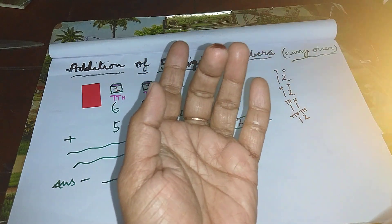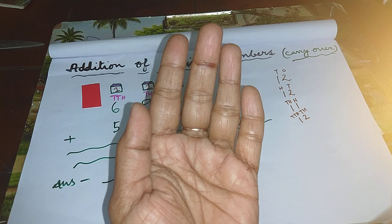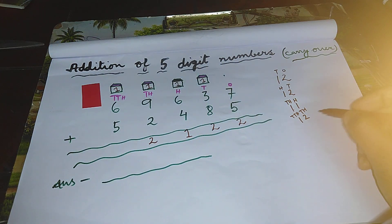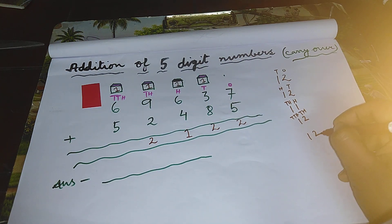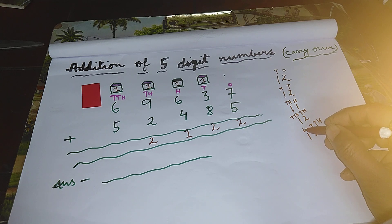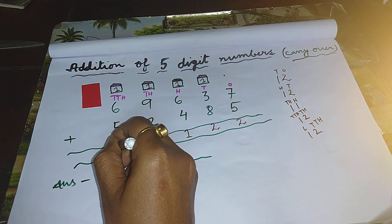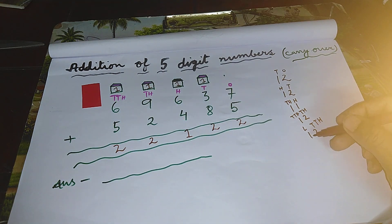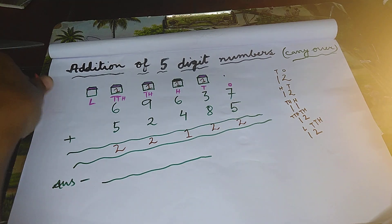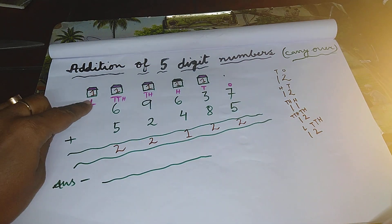From here to here, total how many lines are there in all? Twelve lines. Two belongs to ten thousand's place. One belongs to lakh's place. So two will sit in the ten thousand's column. This one will sit in a separate room in lakh's place.